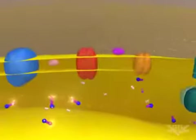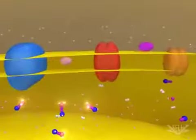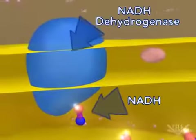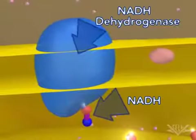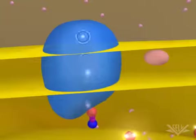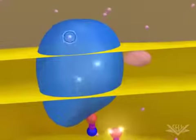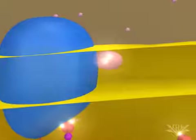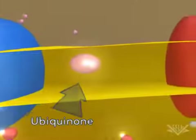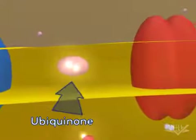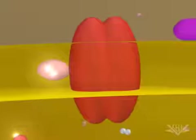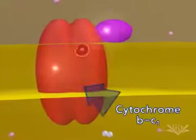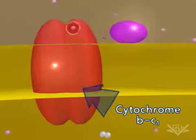At the start of the electron transport chain, two electrons are passed from NADH into the NADH dehydrogenase complex. Coupled with this transfer is the pumping of one hydrogen ion for each electron. Next, the two electrons are transferred to ubiquinone, a mobile transfer molecule that moves the electrons to the cytochrome BC1 complex.